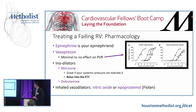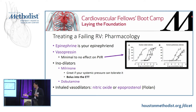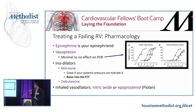Just a couple more slides on treating RV dysfunction. Epinephrine is going to be part of your armamentarium — it sells itself. At higher doses there's something to be said about increasing PVR and causing RV dysfunction, but more often than not this will be your go-to, especially when systemic pressures are low. Vasopressin is also a good friend of the RV because it has minimal to no effect on PVR — there are no vasopressin receptors there.